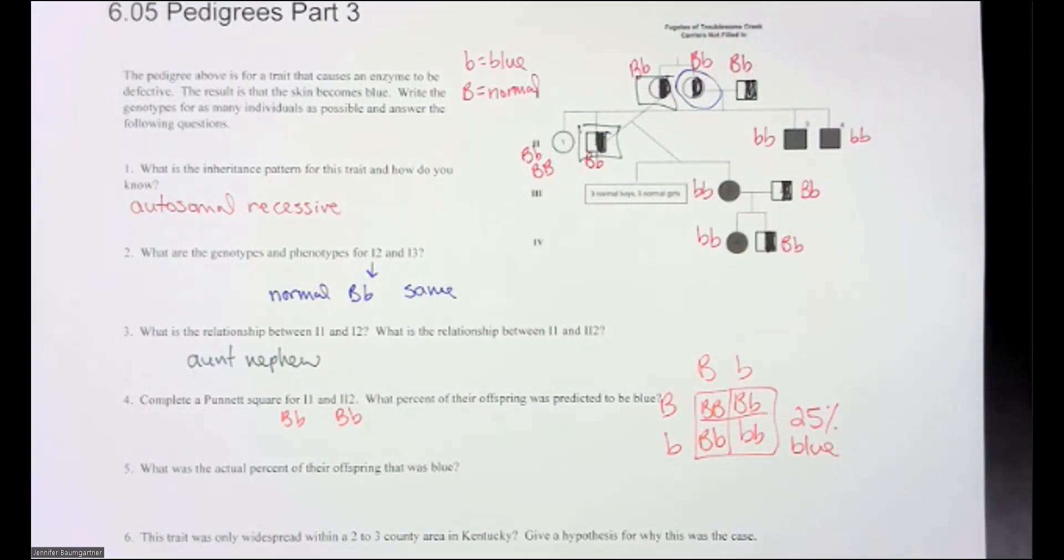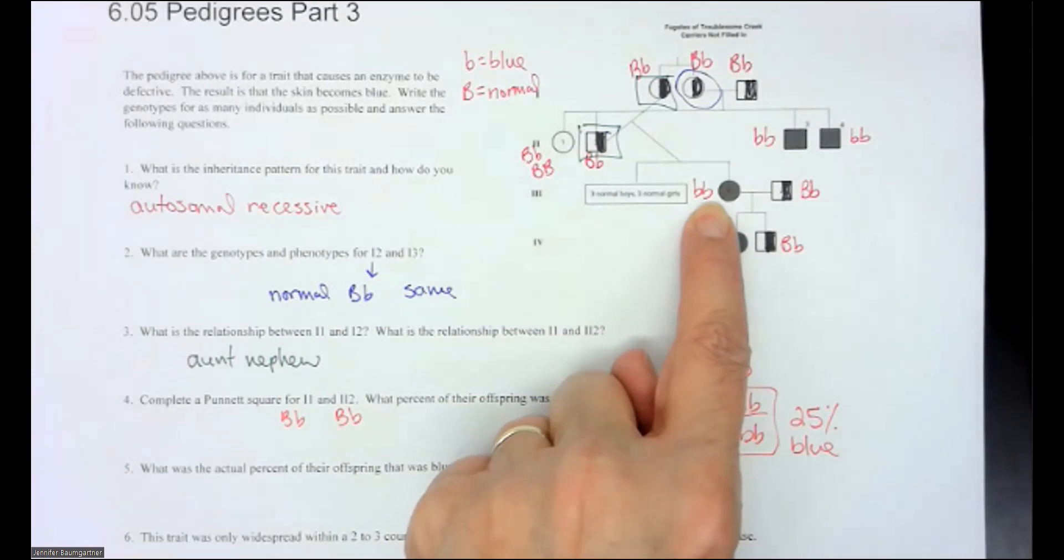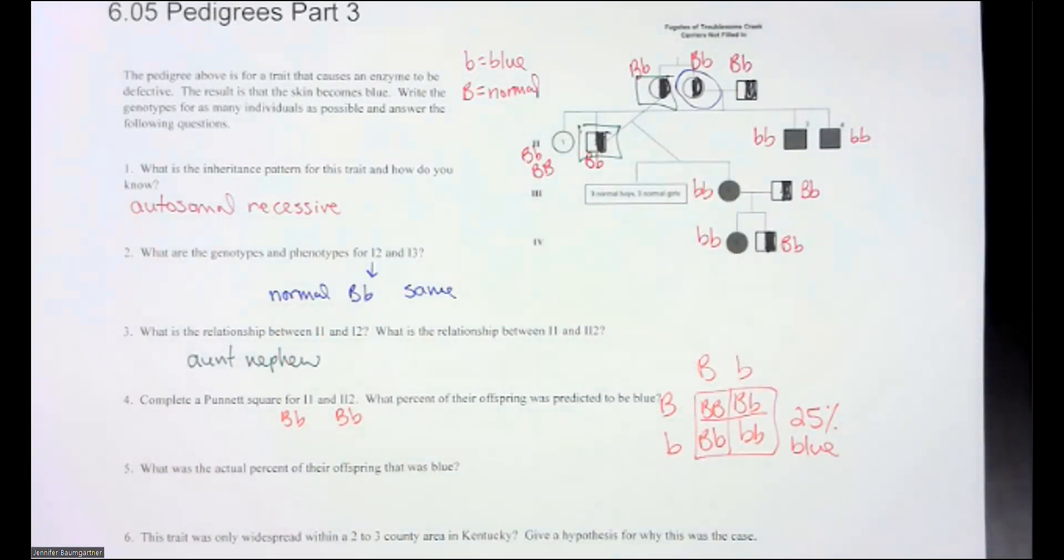But what actual percent was blue? Well, they had three boys, three girls, and one child that had the blue disorder. So they actually only had one out of seven. And when I divide that out, I know what one divided by eight is. I'm not sure what one divided by seven is. That is 14%. So they should have potentially had 25% offspring that were blue, but they only had 14%. So in a way, you could say their kids kind of beat the odds.